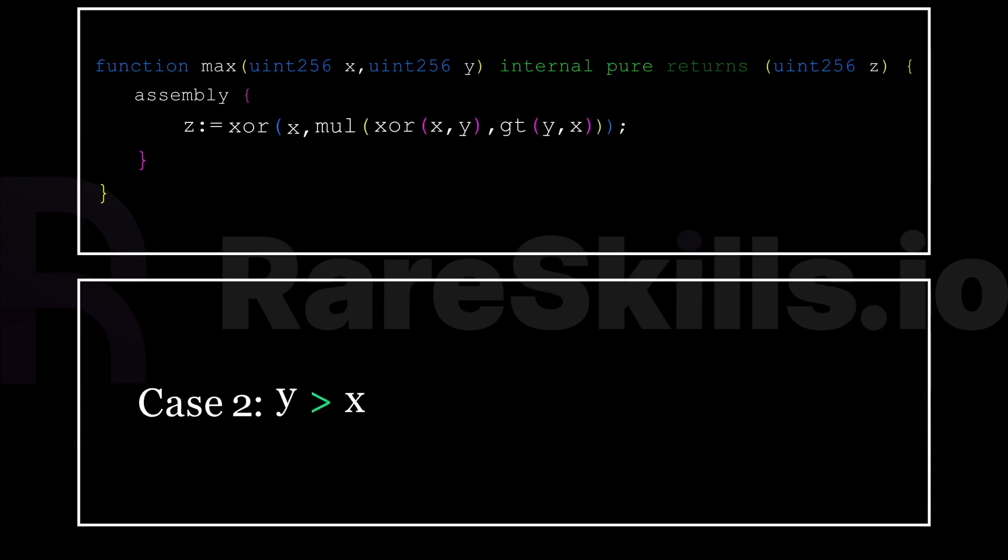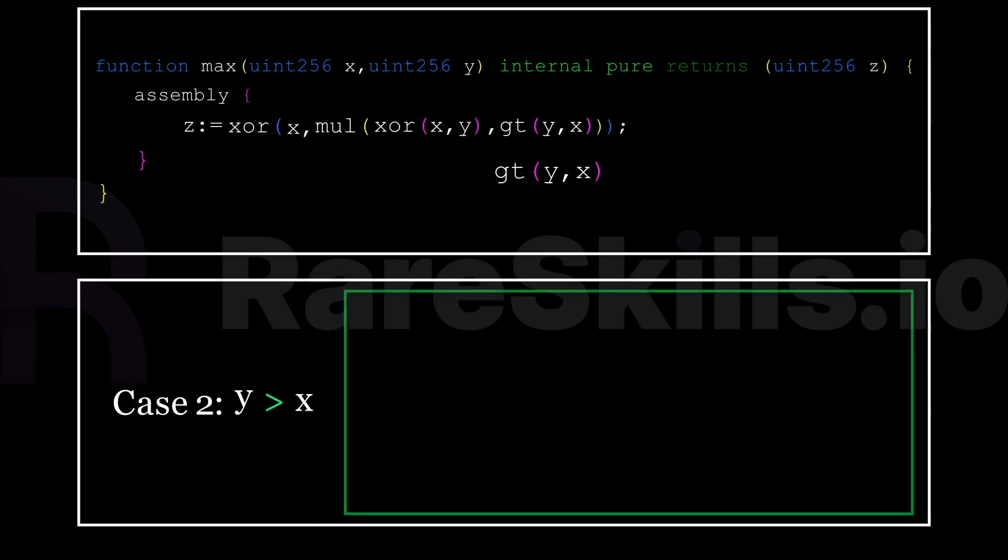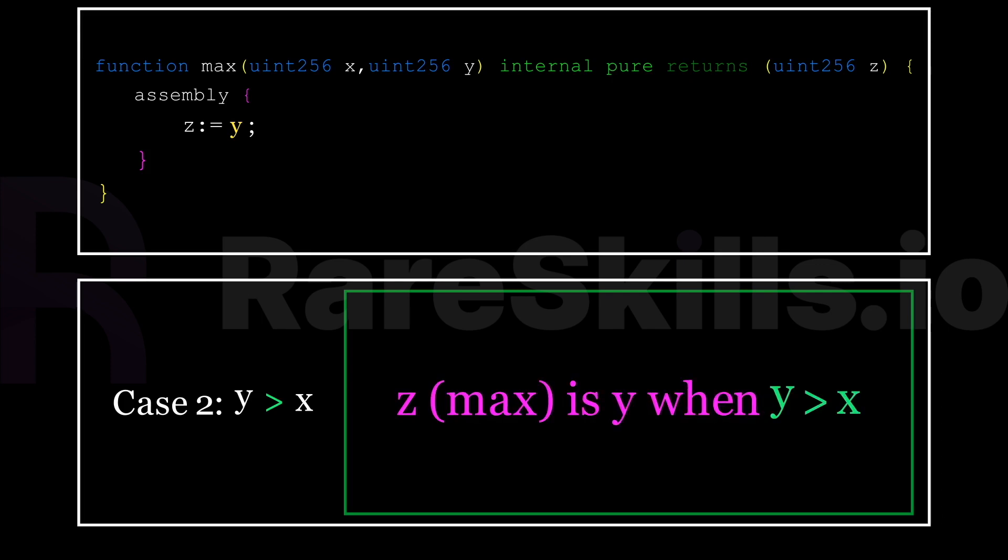Second, we consider the case where y is greater than x. If y is greater than x, then gt yx evaluates to 1, and multiplying xor xy by 1 evaluates to xor xy. We now have x xor xor xy. But we know from the third rule that x xor x xor y evaluates to y. Therefore, if y is greater than x, the entire expression will evaluate to y, returning y as the max.